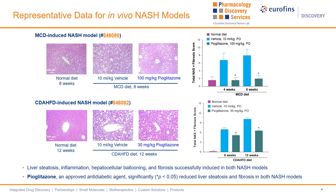Shown here in this slide are the effects of pioglitazone on liver histopathological changes in mice fed either MCD or CDA high-fat diet. Pioglitazone was administered for 8 weeks for MCD and 12 weeks for CDA high-fat diet. As is clear, pioglitazone significantly reduces the NAFLD activity score (NAS score), as well as the fibrosis score in both MCD and CDA high-fat diet-induced NASH models. Pioglitazone also has effects on liver enzymes and liver hydroxyproline levels, which are not shown in this slide. Thus, we have two NASH animal models available to help clients evaluate their NASH drug candidates.